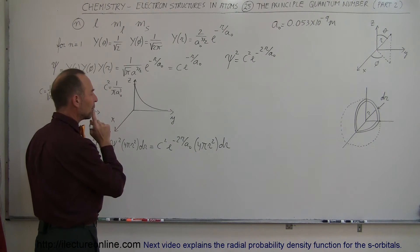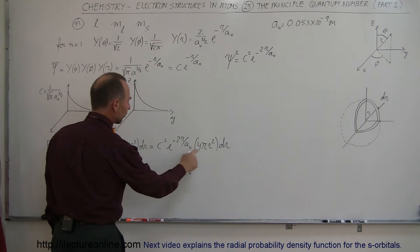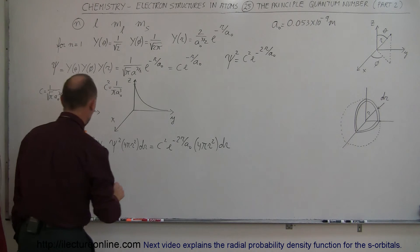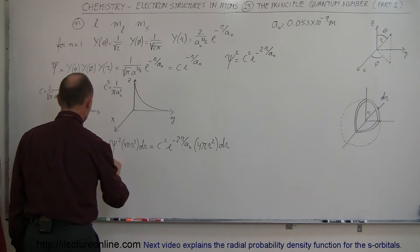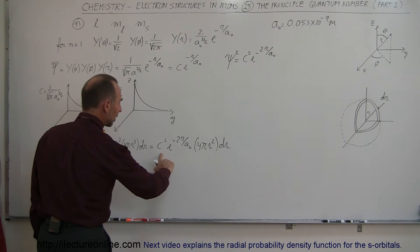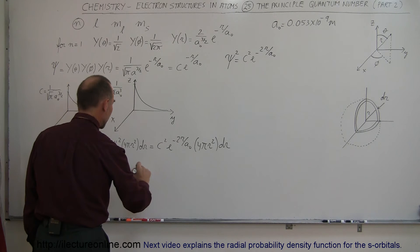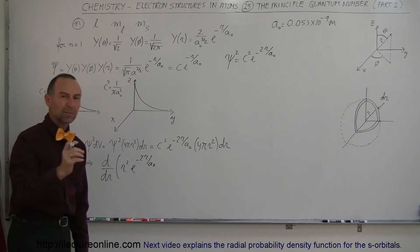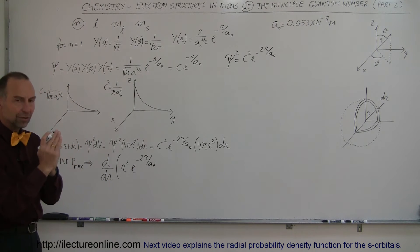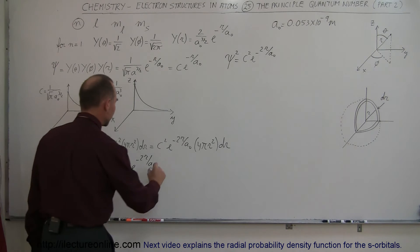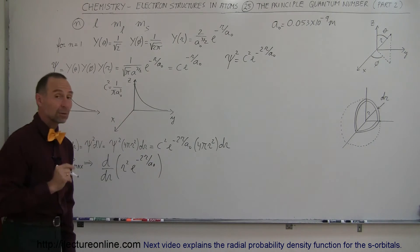We can get rid of the constants — c squared, 4, and pi — because that will not change anything in the answer. So we're going to take the derivative d/dr of what's left: r squared times e to the minus 2r over a sub-naught. The dr we can treat as a small delta r and ignore as well. So we take the derivative of that and set it equal to zero.